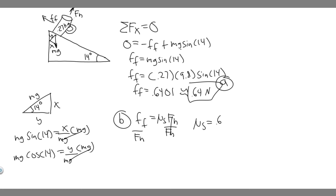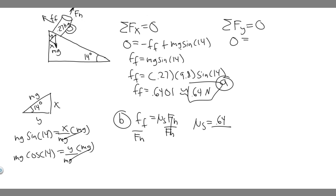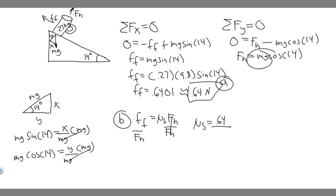To find F_n, we take the sum of the forces in the y direction, set equal to 0 since the object isn't accelerating in that direction. In the y direction we have two forces: the normal force (upward, positive) and the y component of the weight force (downward, negative), which is mg·cos(14°). So: 0 = F_n − mg·cos(14°), meaning F_n = mg·cos(14°).